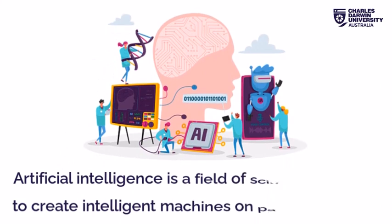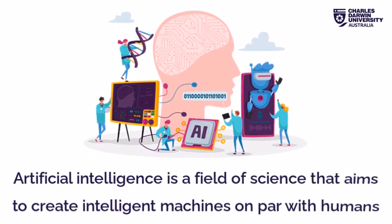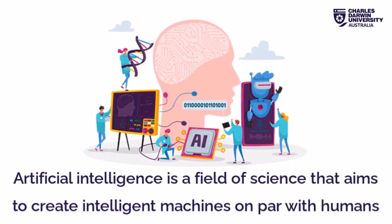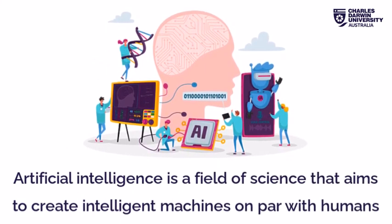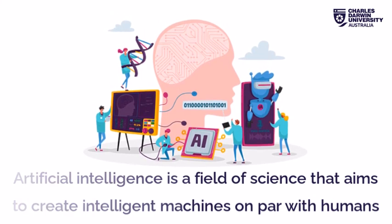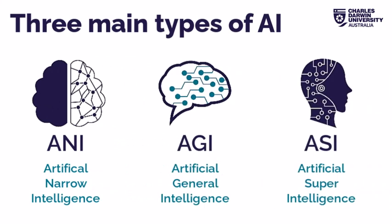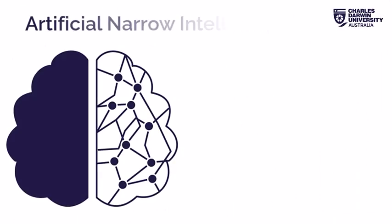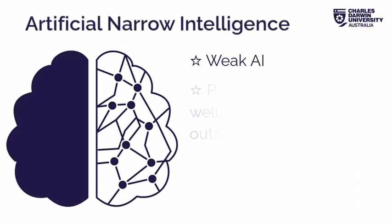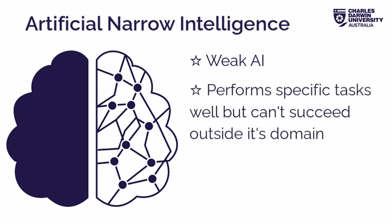The field of artificial intelligence, or AI, aims to create intelligent machines that can learn and perform tasks on par with humans. There are three main types: ANI, AGI and ASI. ANI, or artificial narrow intelligence, is a type of weak AI that performs specific tasks well but cannot succeed outside its domain.